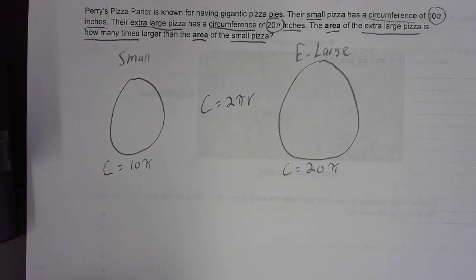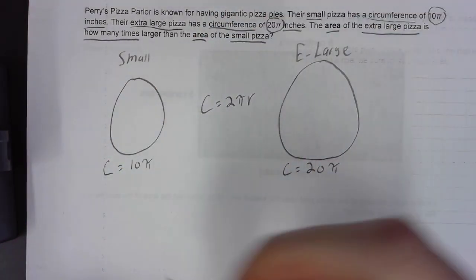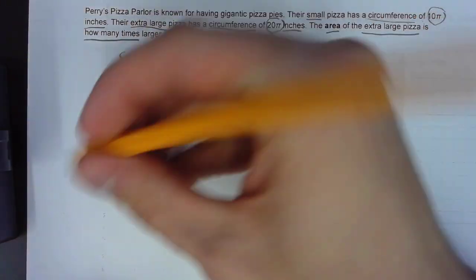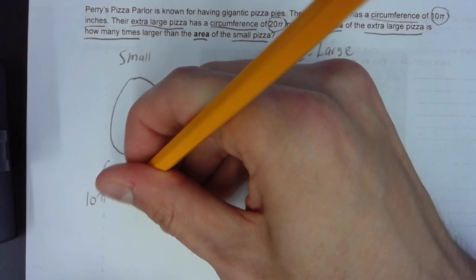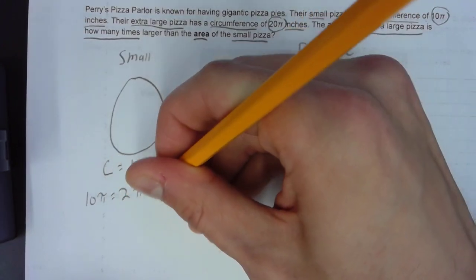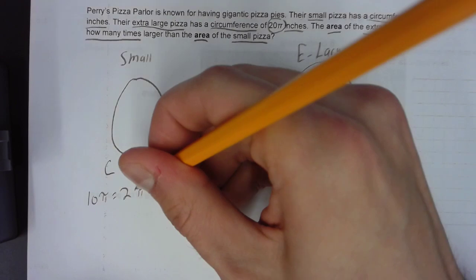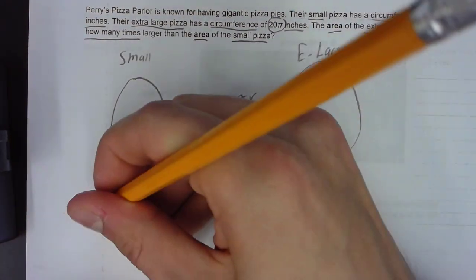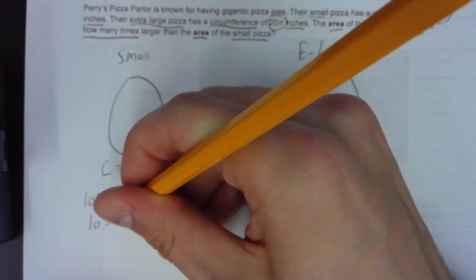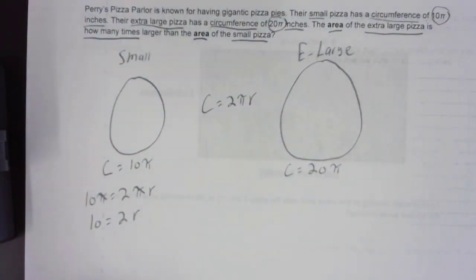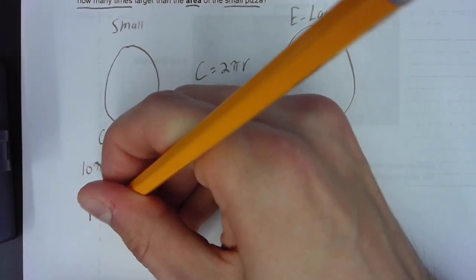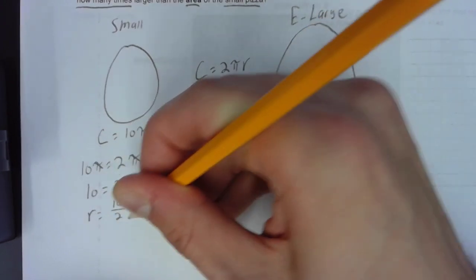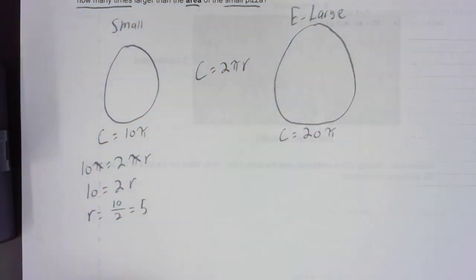As many of you can probably identify, we need to find the radii for each. So, C is 10π, so we know 10π equals 2πr. We can cross out the π's here. We have 10 equals 2r. And if we wanted to solve that, r equals 10 over 2, which equals 5.